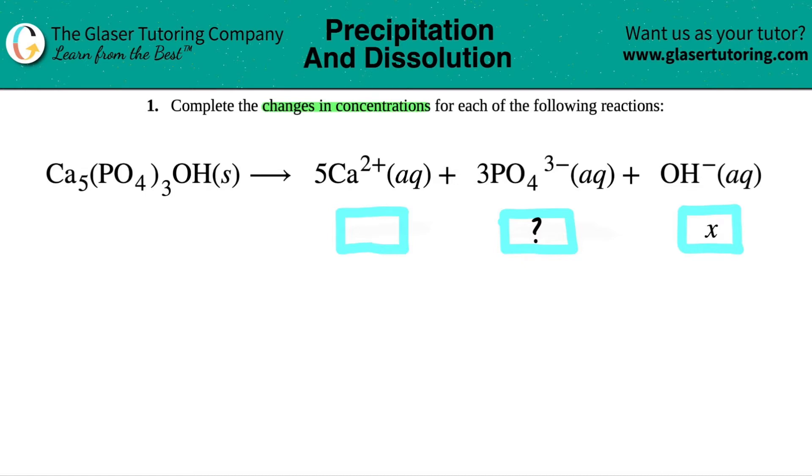To find out what the changes are, we always look at the mole ratio, aka the coefficients in front of these ions, right? So I go to the balanced equation. I see that there's a five in front of the calcium, there's a three in front of the phosphate, the PO4, and there's no number in front of the hydroxide.